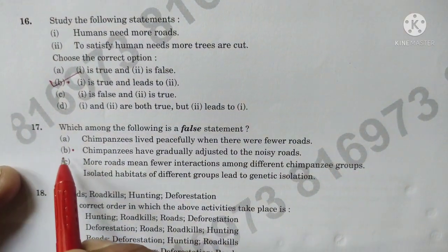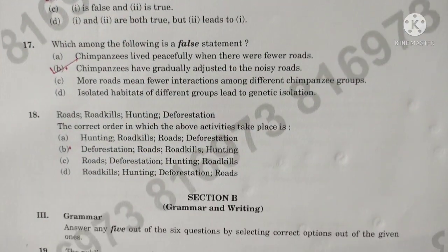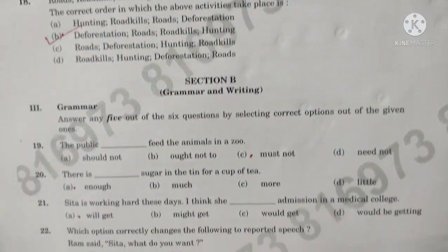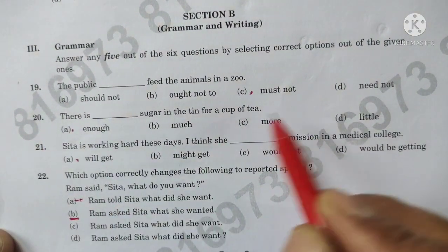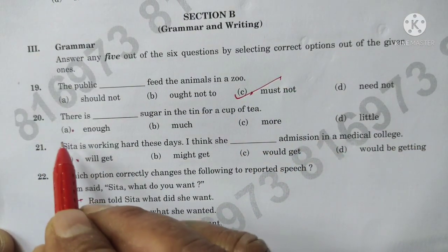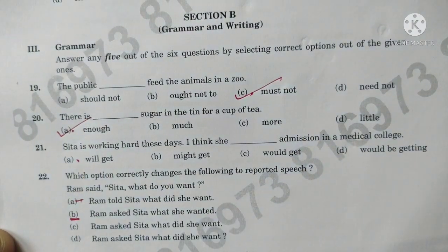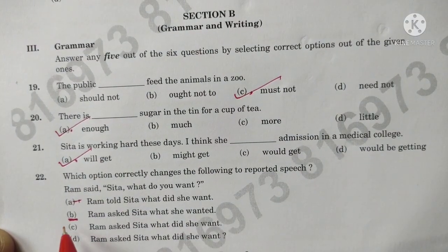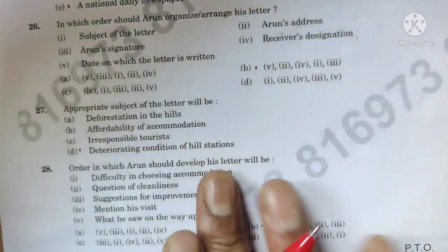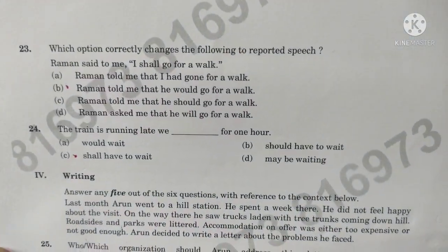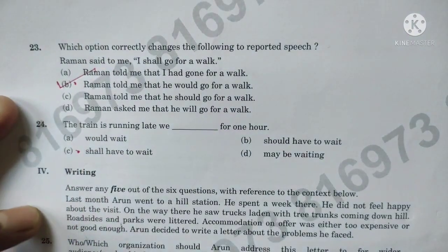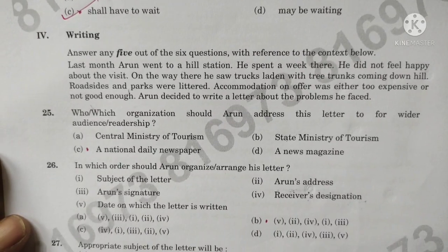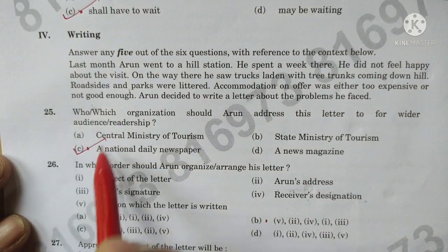Question number 17, B is the correct option. Question number 18, B is the correct option. Question number 19, C is the correct option. Question number 20, A is the correct option. Question number 21, A is the correct option.